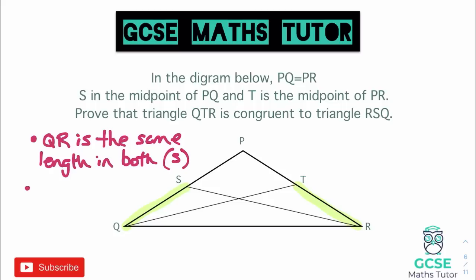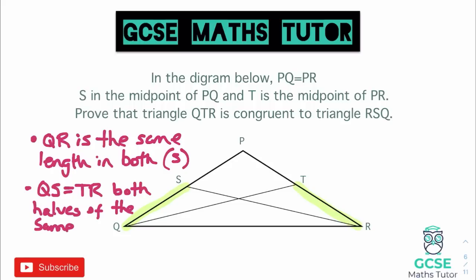We mentioned that the midpoint means the halves are equal. Since it's an isosceles and S is a midpoint on each side, both halves must be the same length. So: QS is equal to TR, because both are halves of the same length side. That gives us a second side.